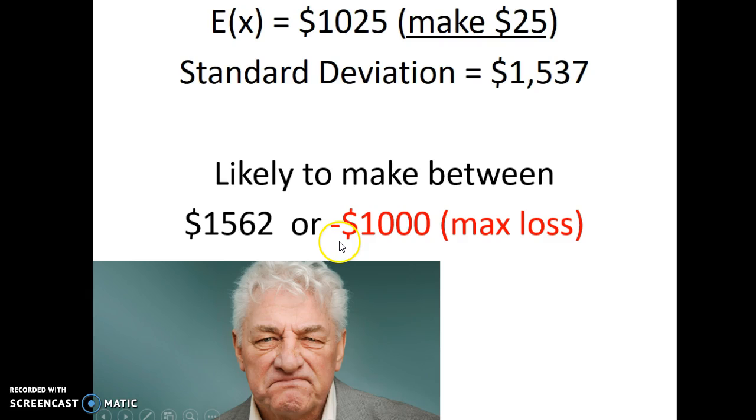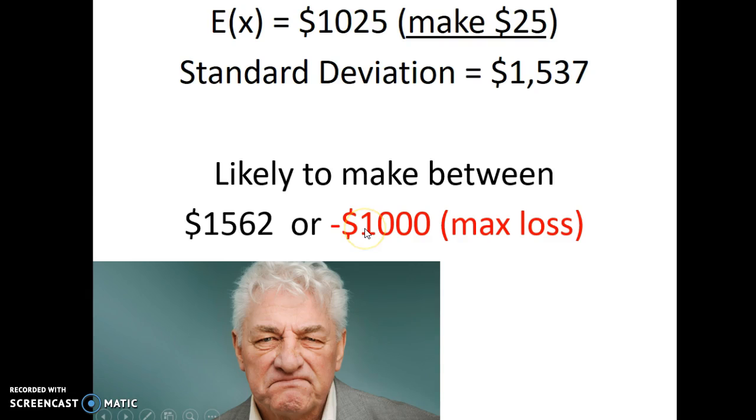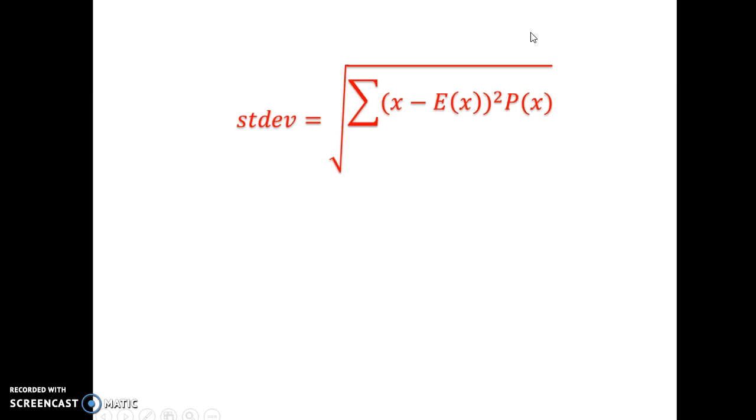So the spread is actually quite large. So there's quite a bit of risk in betting. We can't make our decision just based on this $25 profit. We really need to look at whether we can handle big gains, but can we also handle this big loss. So this really indicates that the large spread lets us know that this number is definitely not a sure thing.